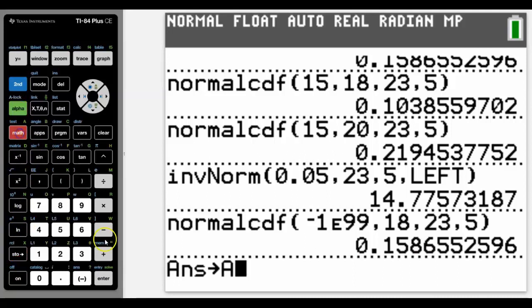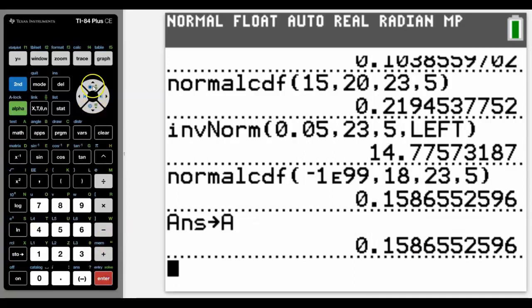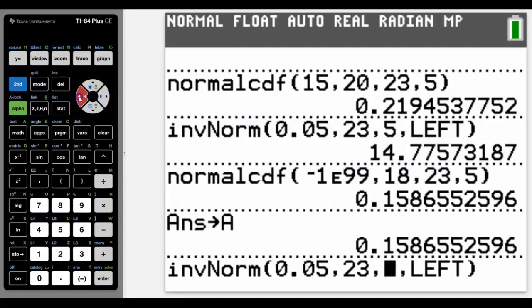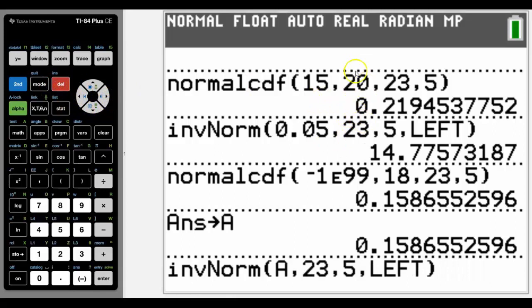If we use the store button for that value, and then we go back up to inverse norm, and rather than using the bottom five percent, I'm going to use the A value. Well, that should give us the same value that we got up earlier. And let's see if it does.